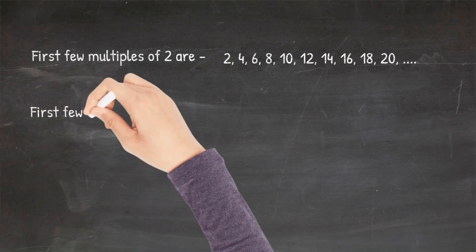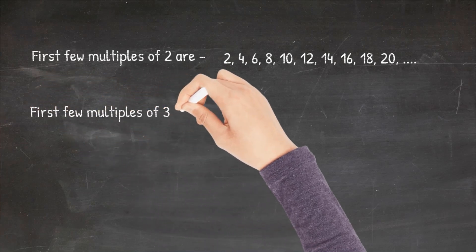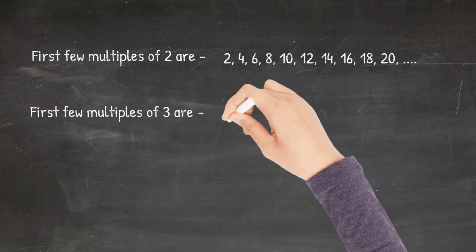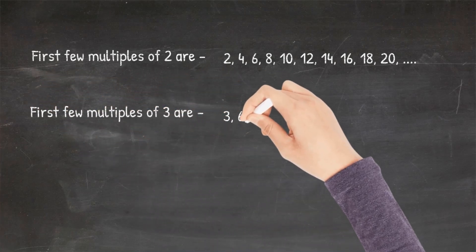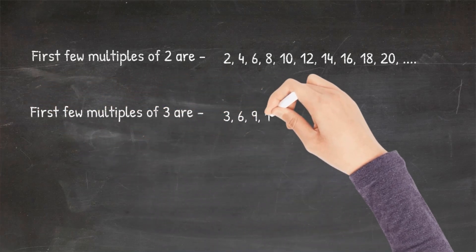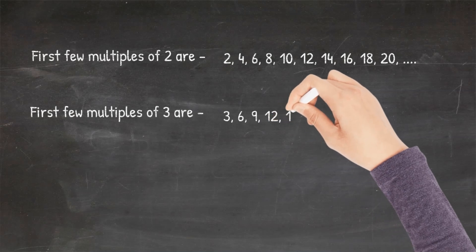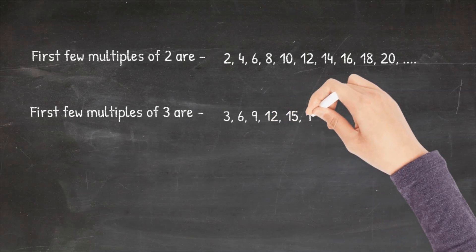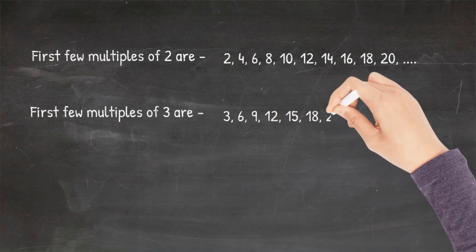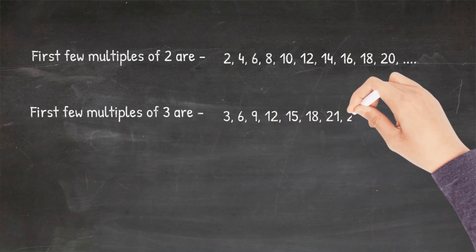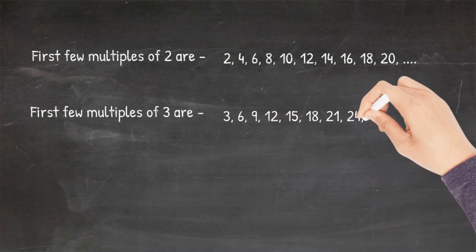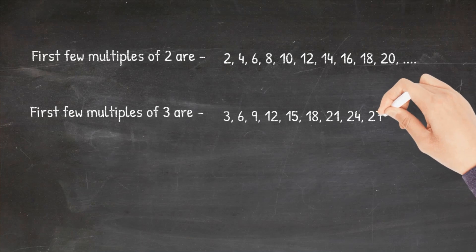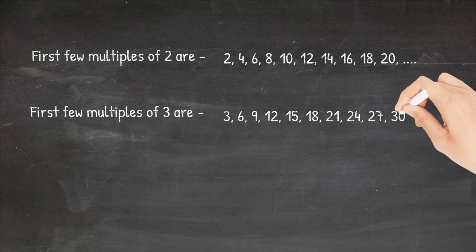And the first few multiples of 3 are: 3, 6, 9, 12, 15, 18, 21, 24, 27, 30, and so on.